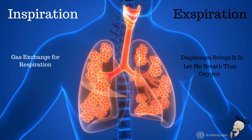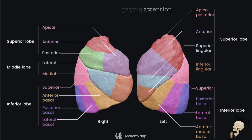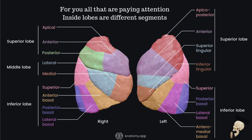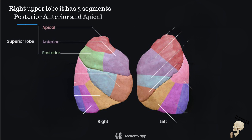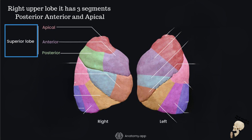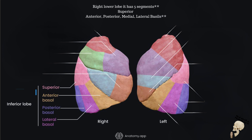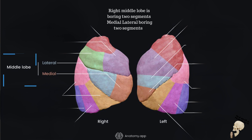Before you all — those paying attention — inside lobes are different segments. If you love lobes, you might love segments; they're kind of small but they're worth a little mention. Right upper lobe has three segments: posterior, anterior, and apical. Right lower lobe has three segments: superior and two basals — anterior and lateral basals. Right middle lobe: boring two segments, medial and lateral.